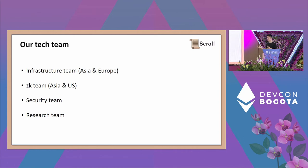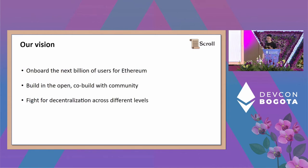We have a research team exploring multiple research directions: how to decentralize the sequencer, how to upgrade the next generation proof system, and contributing to many Ethereum EIPs. Our vision is to onboard the next billion users to Ethereum — making transactions really cheap and confirmation really fast will bring more users into the Ethereum ecosystem. Everything we build is totally open, especially the ZK EVM part, which is co-built with a large community including the Privacy and Scaling Explorations team from the Ethereum Foundation and other community members.